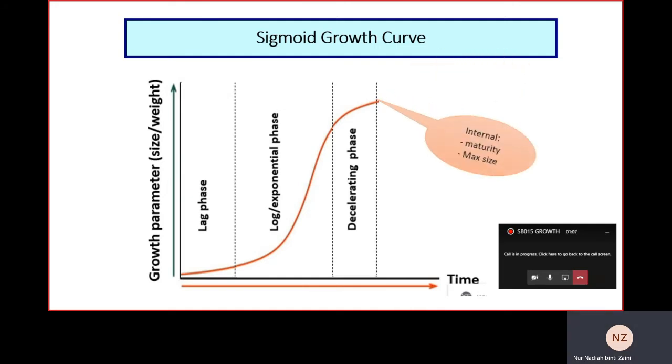It is either by internal factors or external factors. The example of internal factors includes maturity and maximum size, while external factors include food supply and space.